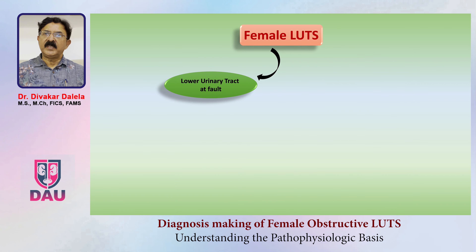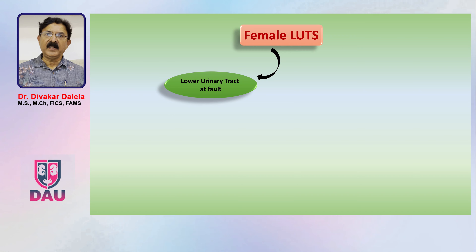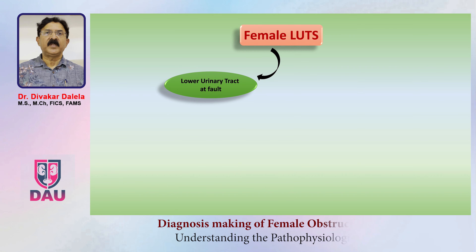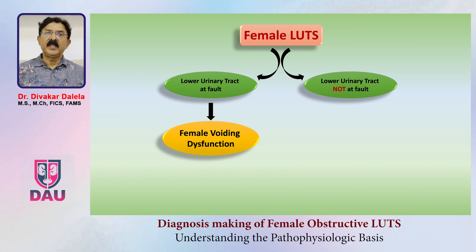When you have a patient with lower urinary tract symptoms, these symptoms can happen because the lower urinary tract itself is at fault. But there are patients where the lower urinary tract is not at fault, yet they have symptoms. When patients have a demonstrable disease in the lower urinary tract to account for their LUTS, we use the term female voiding dysfunction.